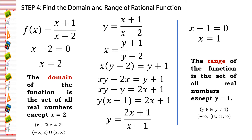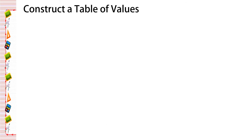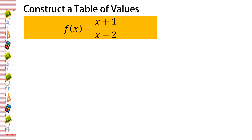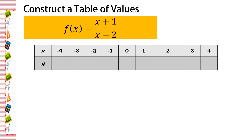After finding the domain and range, let's proceed to constructing a table of values so we can plot the points on the Cartesian plane and trace the graph of the rational function. We represent the given function again and assign x values from negative 4 to positive 4, then solve for the corresponding y values.